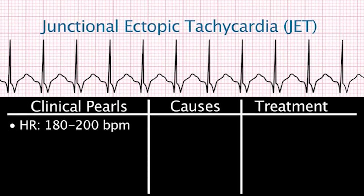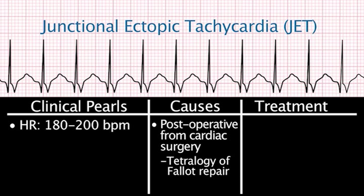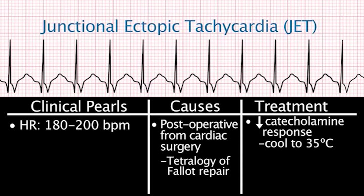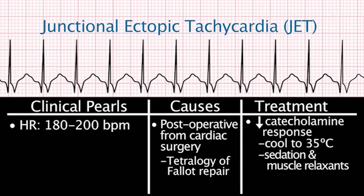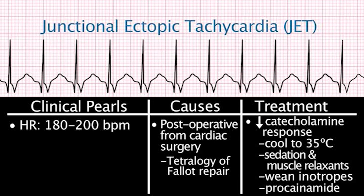This rhythm is only seen in post-operative cardiac surgical patients. It occurs frequently after tetralogy of Fallot repair. Treatment focuses on decreasing the patient's catecholamine response to surgery by cooling the patient to 35 degrees Celsius, administering sedation and muscle relaxants, and weaning inotropic infusions such as dopamine and epinephrine. A procainamide infusion can also be given to decrease the fast heart rate.